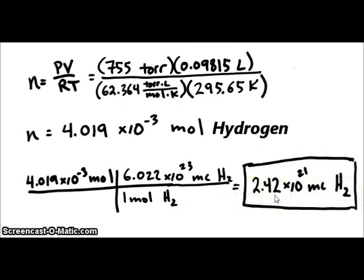Our final answer will have 3 sig figs. This is going to be based off of the number which had the least number of sig figs in our setup, which was the pressure of 755 torr.